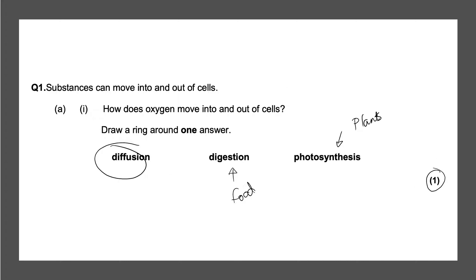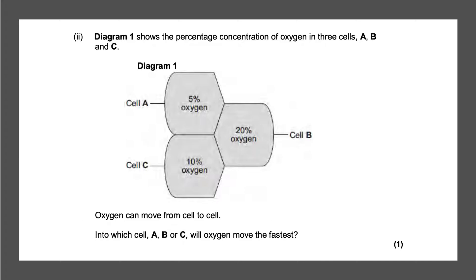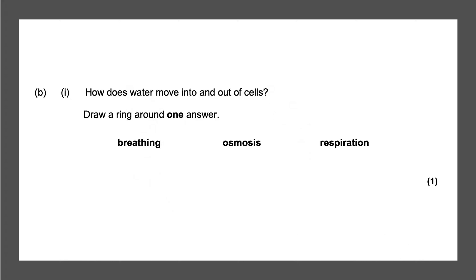That will give you your one mark. Next question: diagram one shows the percentage concentration of oxygen in three cells A, B and C. Oxygen can move from cell to cell — into which cell will oxygen move the fastest? Remember, one of the factors affecting the rate of diffusion is the concentration difference. The percentage which is lowest will make oxygen move fastest because there will be a higher difference in concentration. Cell A has the lowest concentration of oxygen, so cell A is the answer for one mark.